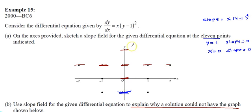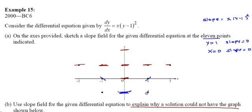When x is 0, slope is also 0, so those points along x=0 have horizontal marks. For other points, when y is 0 and x is 1, the slope is 1. Plugging in gives (-1)² = 1, so the slope will be somewhat flattened. You can easily sketch the 11 points for the slope field.